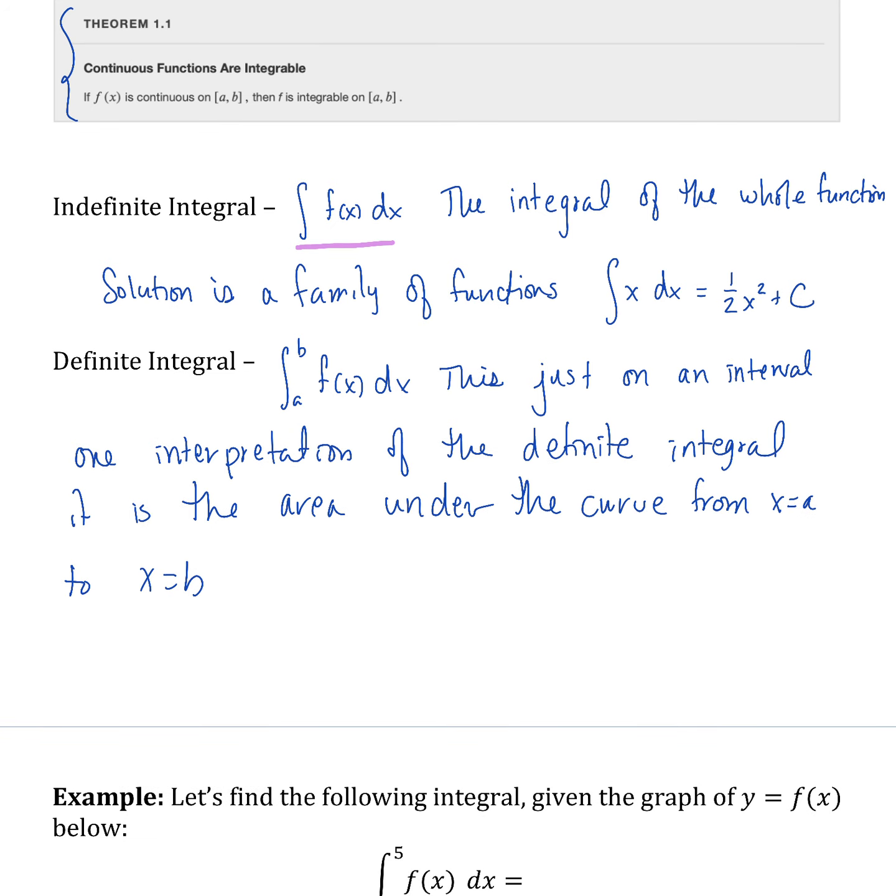For example, if we're looking at our function y equals x from a to b, our definite integral would be this area, and our solution is a number. That's the big difference between the two types of integral. An indefinite integral gives you a function or family of functions as your solution. A definite integral is a number, and one of our interpretations is the area under that curve.